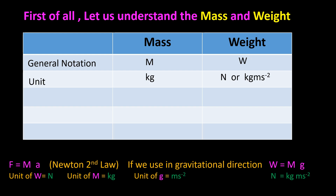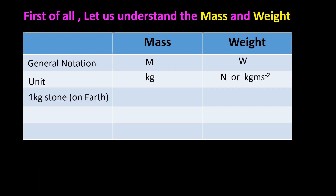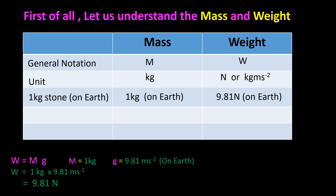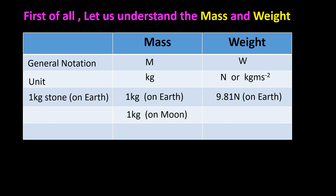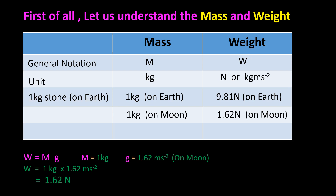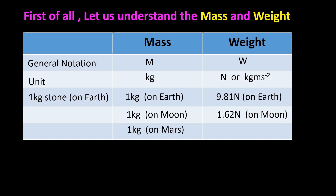If we apply Newton's second law in the gravitational direction, F becomes W and a becomes g, i.e., W equals mg. A 1 kg stone on Earth weighs 9.81 N on Earth, 1.62 N on the Moon, and 3.71 N on Mars — the mass remains 1 kg everywhere.